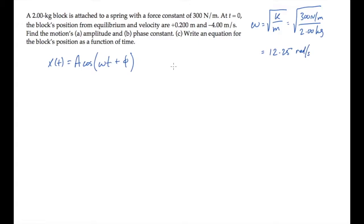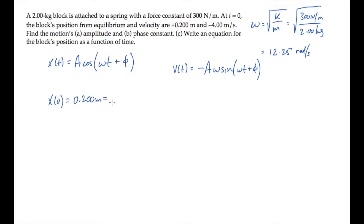Now let's write the block's velocity as a function of time — that's the derivative of position, so minus A·ω·sine(ωt + φ). Next, write the position and velocity at time equals 0 as given in the problem statement. At time 0, the position is 0.2 meters, and substituting t = 0 into the position equation gives us A·cosine(φ). We don't know either the amplitude A or the phase constant φ.